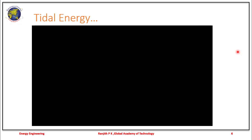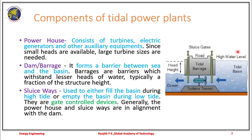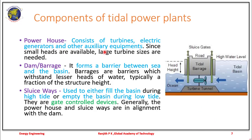To extract tidal energy into power, a typical tidal power plant includes a power house consisting of turbines, electric generators, and other auxiliary equipment. Since the heads are very small, large turbine capacity is needed. It also consists of a dam or barrage, which acts as a barrier between the sea and the basin. Barrages are barriers designed to withstand the lesser heads of water.